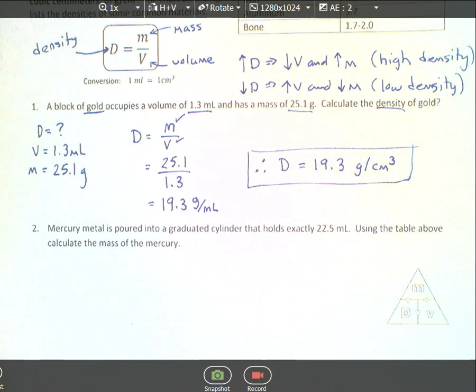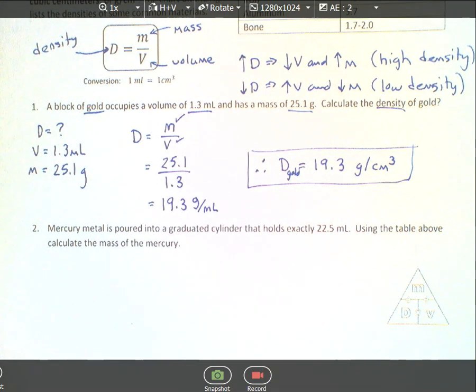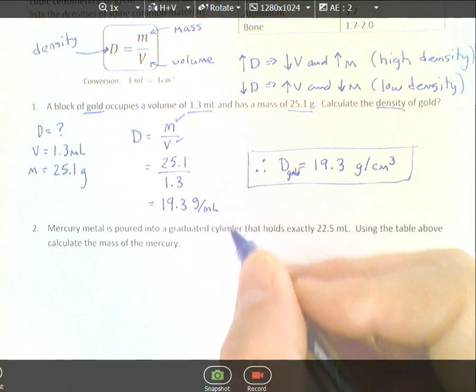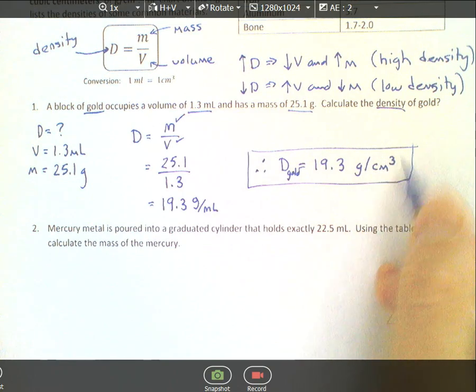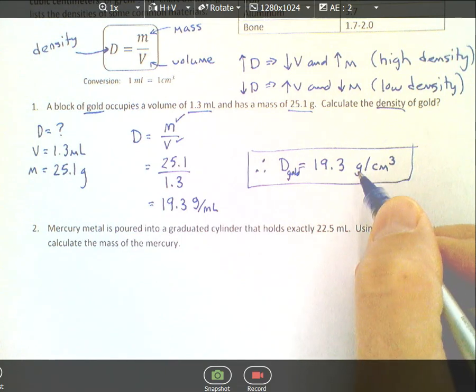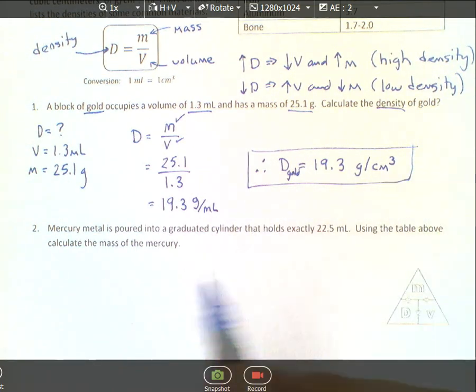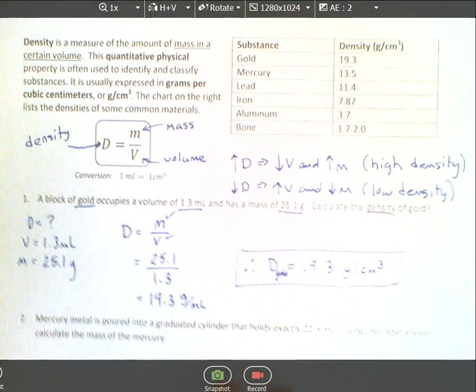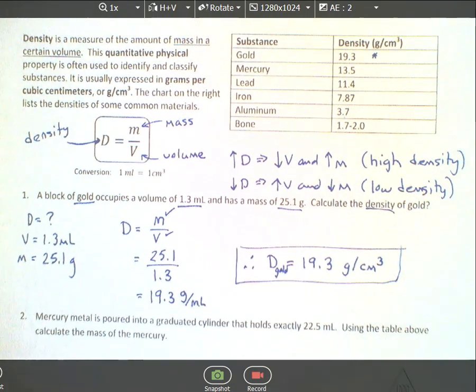Therefore, density equals 19.3 grams per cubic centimeter. I'll put a box around the answer. Now we know that's the density of gold. You could even put gold as a subscript. Notice I changed milliliters into cubic centimeters. This is a way of reporting it where you can use either grams per milliliter or grams per cubic centimeter. Since one milliliter is one cubic centimeter, we can do that without changing any numbers. If you look back to your chart, gold is 19.3, so this matches.